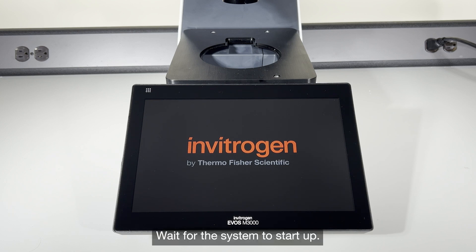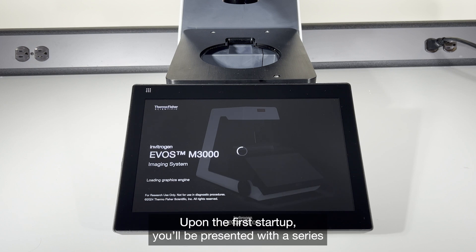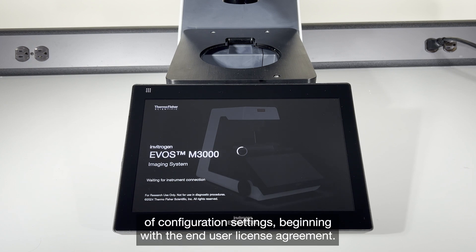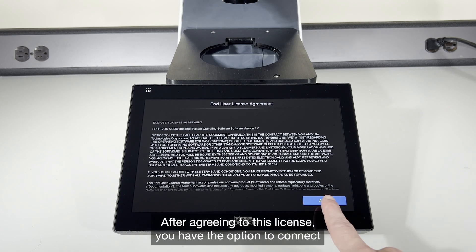Wait for the system to start up. Upon the first startup, it will be presented with a series of configuration settings, beginning with the end user license agreement. After agreeing to this license, you will have the option to connect the system to a local network using the USB Wi-Fi dongle.